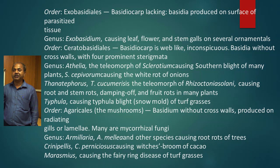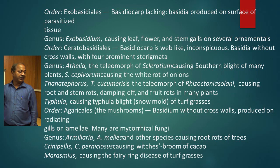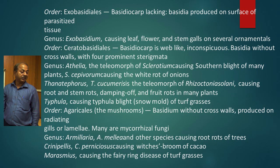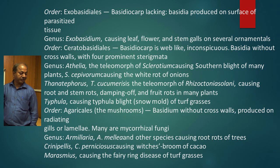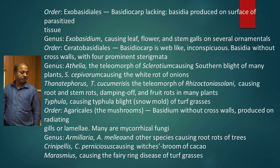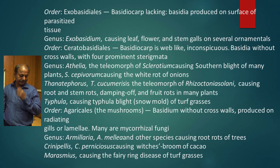The other orders are Ustilaginales, Uredinales, and the third is Exobasidiales. In Exobasidiales, the basidiocarp is lacking and basidia are produced on the surface of parasitized tissues. In that case it is Exobasidium and Ceratobasidiales. The genera are Athelia, Thanatephorus, and Typhula. The next order is Agaricales — the mushroom fungi. The basidium is without cross walls and produced on radiating gills or lamina; many are mycorrhizal fungi also. The genera Armillaria and Boletus species cause root rot of trees. Then Marasmius, causing fairy ring disease of turf grasses.